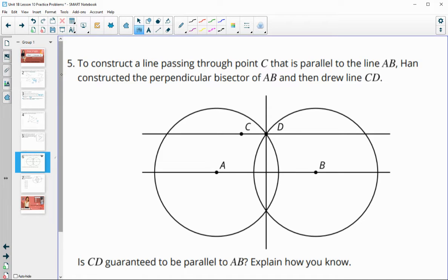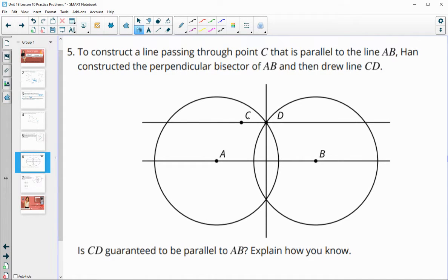Number five: to construct a line passing through point C that is parallel to line AB, Han constructed a perpendicular bisector of AB, then he drew line CD. Does this guarantee that line CD is parallel to AB? That would be false.